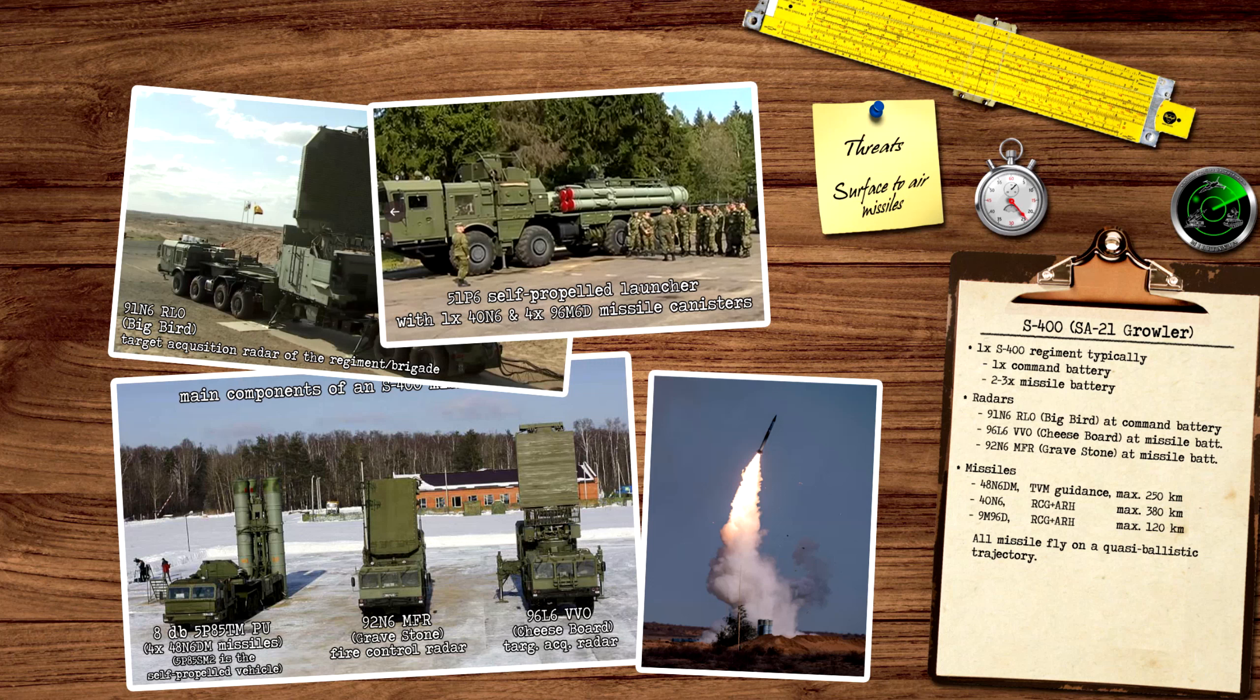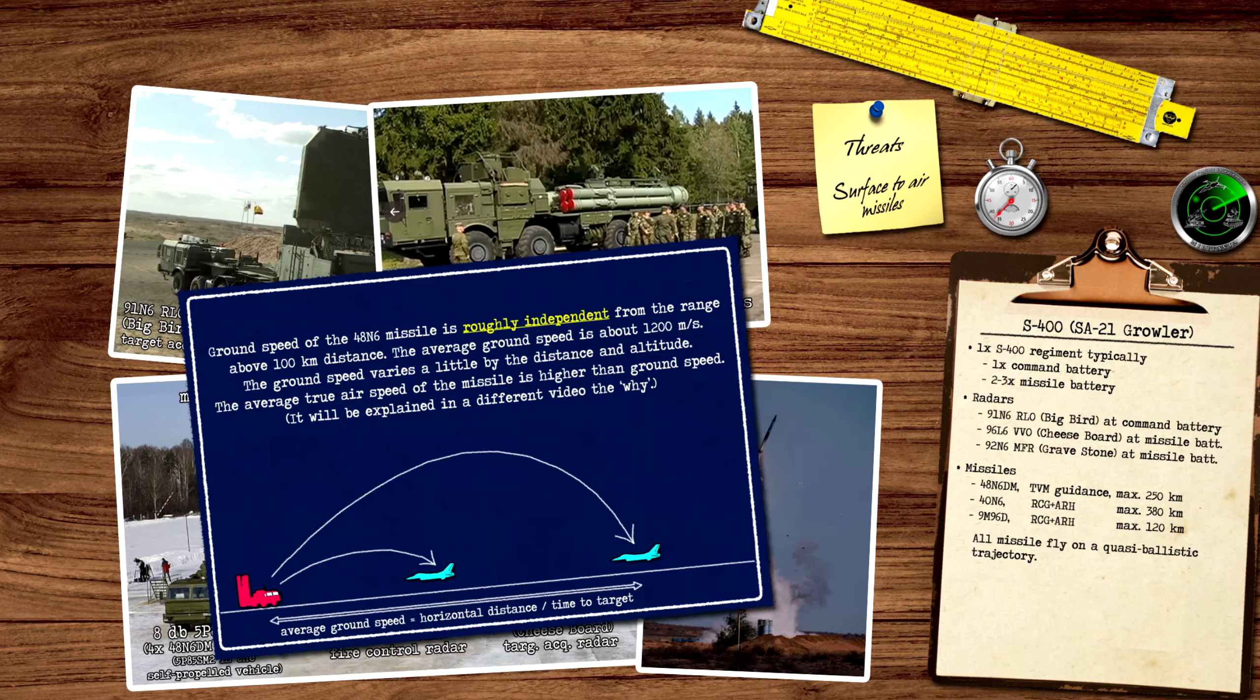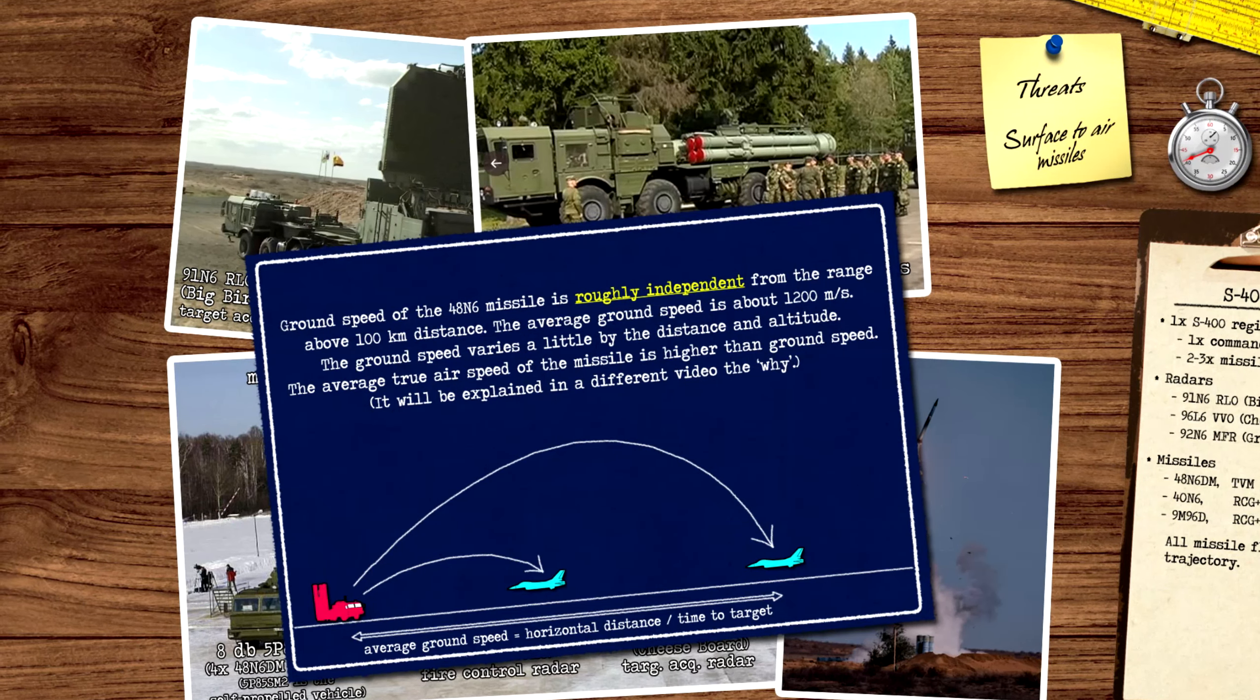The missile has its own onboard radar, which tracks the target in terminal phase, when the guidance from the fire control radar is not needed anymore. This makes possible, in certain cases, shooting down of targets under the radar horizon. Both of the long-range missile types have about 1200 meters per second average speed relative to ground. This varies only a little depending on the altitude and the range of the interception point.